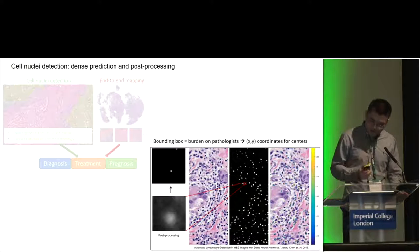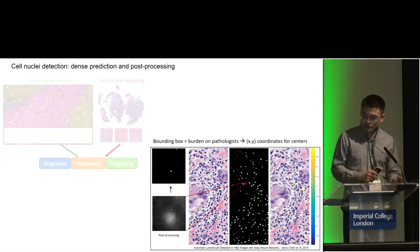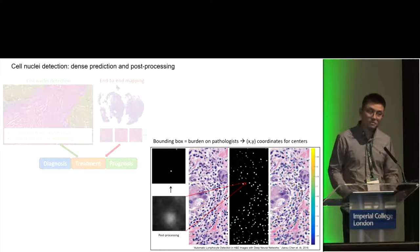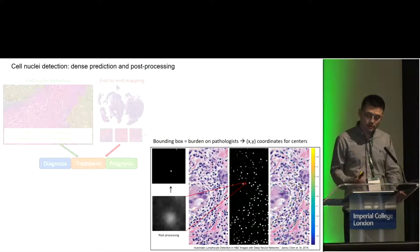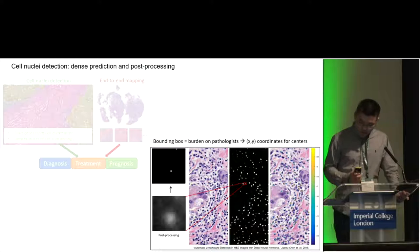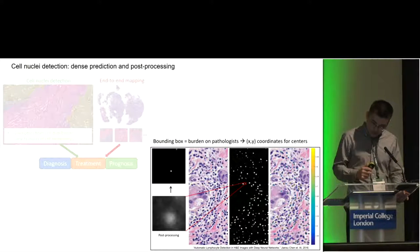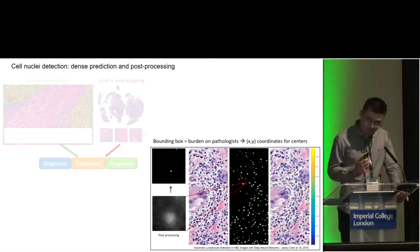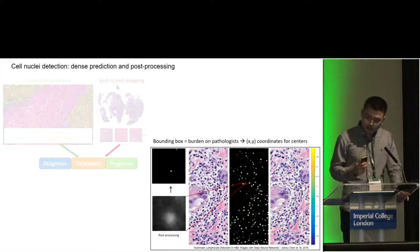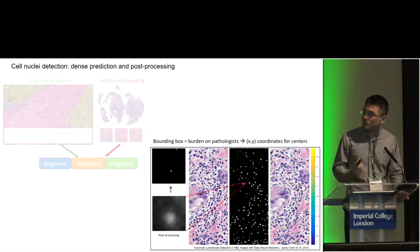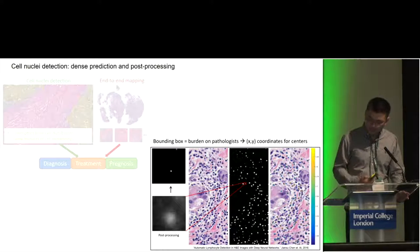Cell and nuclei detection in histology slides is usually defined as predicting X and Y coordinates instead of a bounding box, because the cells are small and it's a lot of burden on pathologists to do the annotation. Most existing methods try to predict a map — specifically a peak around the annotation ground truth location — and then do post-processing, usually non-maximum suppression of the surrounding pixels, to get the final output coordinates.